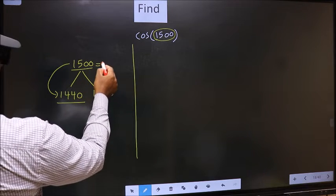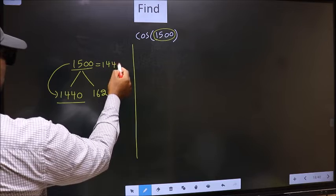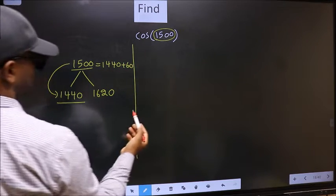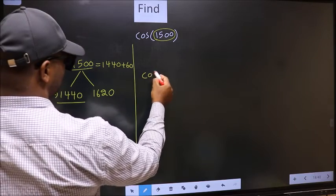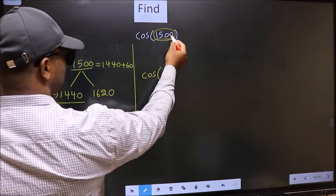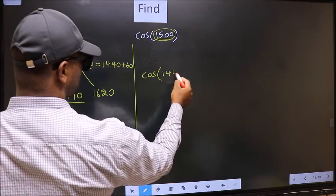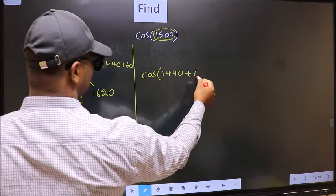So in place of this, now we should write 1440 plus 60. So this will become cos. In place of this, we write 1440 plus 60.